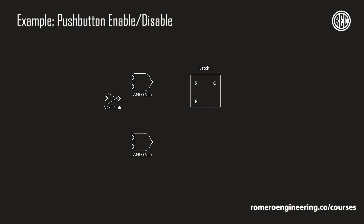The input to our entire logic scheme is a push button — a physical push button on the front panel of the relay. It can go high or low: whenever you press it, it goes high; whenever you release it, it goes low.